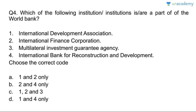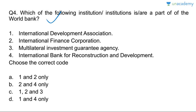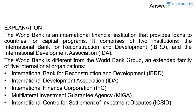Question four: which institutions are part of the World Bank Group? IDA, IFC, MIGA, and IBRD. If the question asks about the World Bank specifically, the answer is IBRD and IDA only — that is D, one and four. But if asking about the World Bank Group, all four are correct. The World Bank Group comprises IBRD, IDA, IFC, MIGA, and ICSID. Remember this difference — UPSC will exploit this.